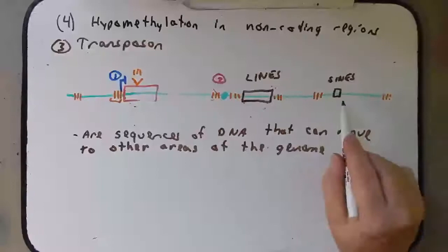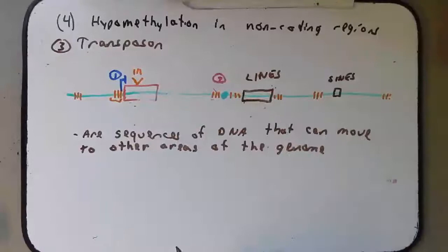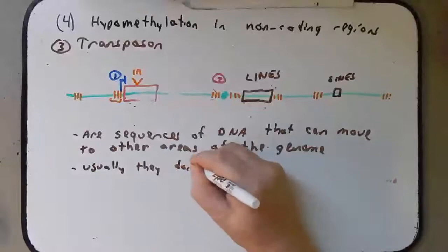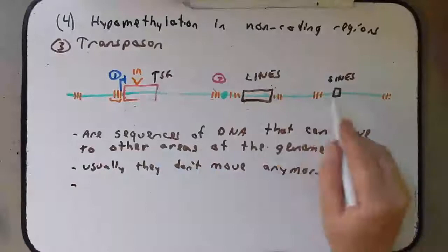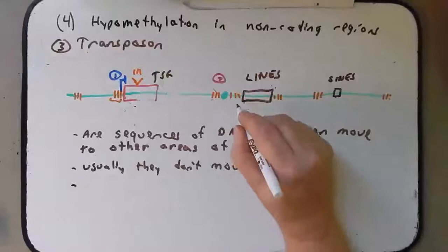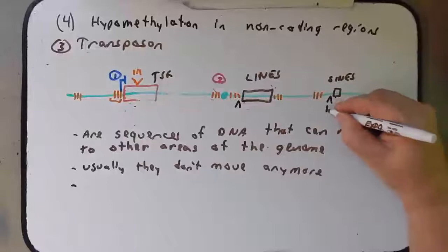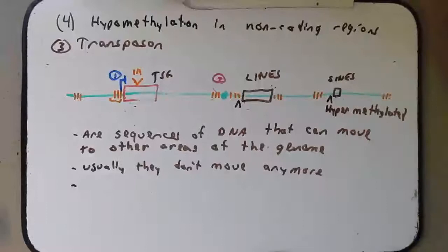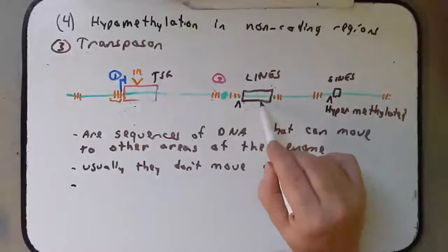Usually, SINEs and LINEs don't move, and that's a good thing — we don't want these to move around our genome. The reason they stay right where they're at is because they are not transcribed, because the areas next to them are typically hypermethylated to keep these genes off. But if they get transcribed, they can copy themselves, cut themselves out of the genome, and they can move. So if they become hypomethylated, they can move.